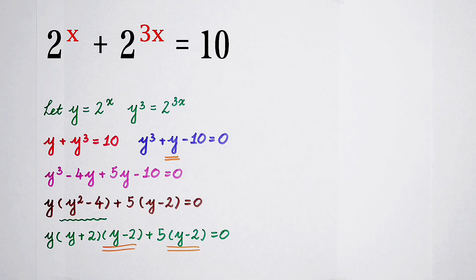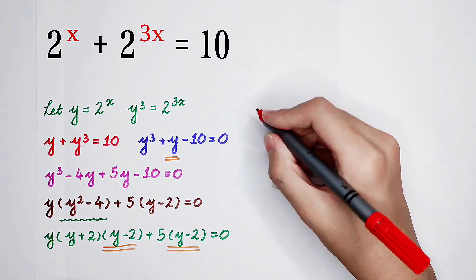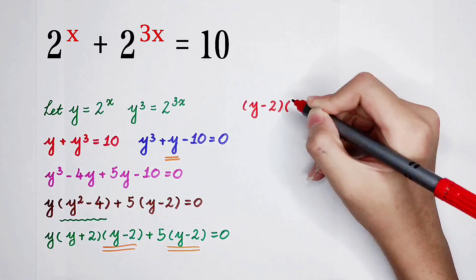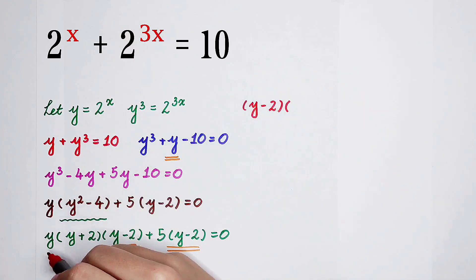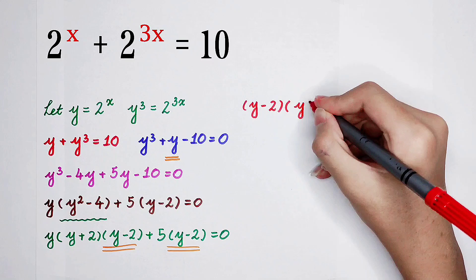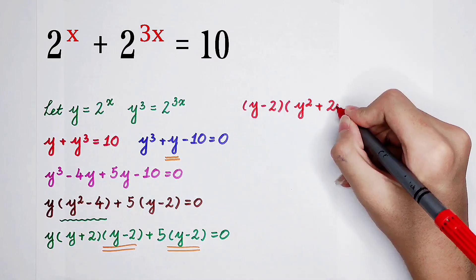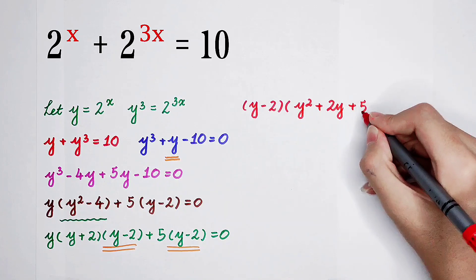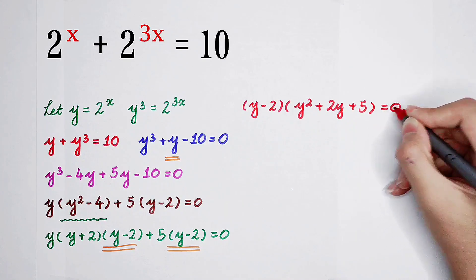We can take it out. So it becomes y minus 2, times what's in the bracket now? y times y is y squared, plus 2y, and then plus 5 equals 0.